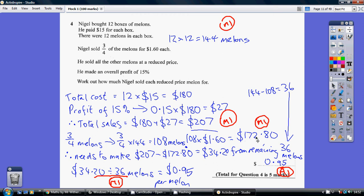So far we've generated $172.80 from selling three quarters of them, but we need a total sales of $207. So this takeaway tells us the extra sales we need to make, which is $34.20. And this is going to be spread over our remaining 36 melons. That's being a quarter of the 144 melons, 36 melons. So $34.20 to be made from selling the remaining 36 melons. So how much is that per melon? $34.20 divided by 36 melons is $0.95 per melon.